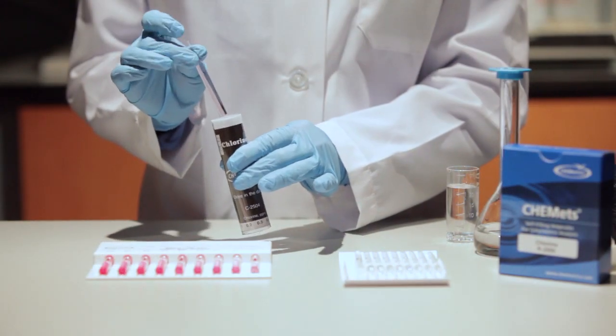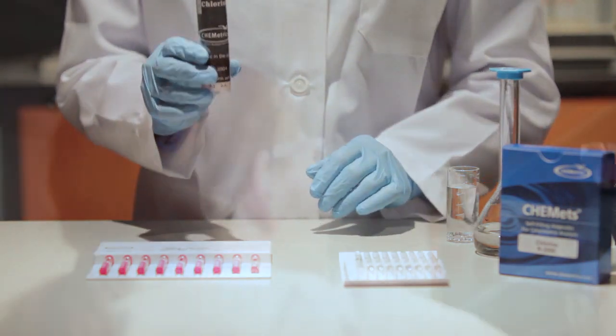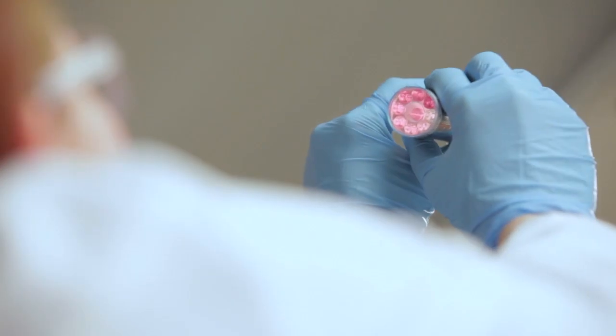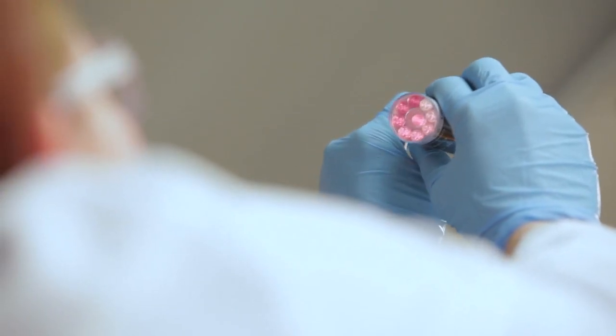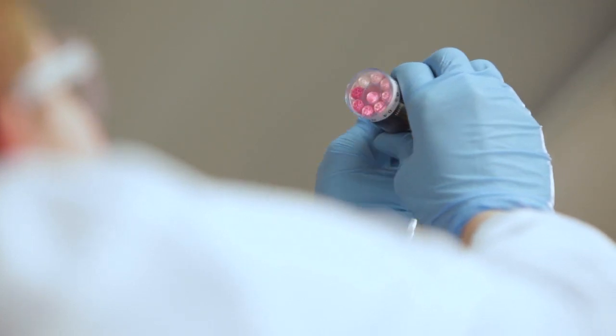For lower concentrations, use the round comparator by placing the ampule into the center tube. Direct the top of the comparator up toward a source of light while viewing from the bottom. Rotate the comparator until the color standard below the ampule shows the closest match. Concentration values are printed along the bottom edge of the comparator label.